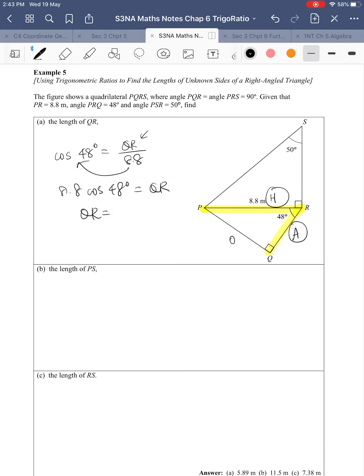Click in the calculator: cosine 48 times 8.8. I'll get 5.8883, rounded to 3 significant figures, 5.89 meters.